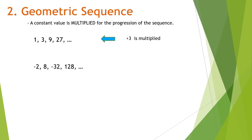Another example: negative 2, 8, negative 32, 128. Notice there is an alternating sign in the progression. When this happens, the number being multiplied is a negative number — specifically negative 4. Negative 2 times negative 4 gives positive 8; 8 times negative 4 equals negative 32; negative 32 times negative 4 equals 128. That is a geometric sequence.